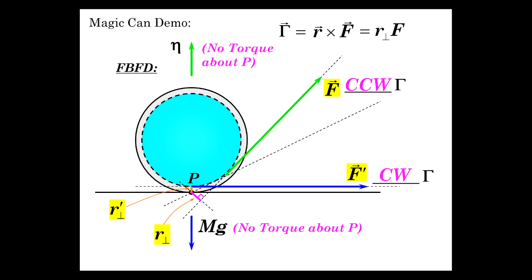And that's how that can be made sense of. And one more. Let's put the line of action right through the point so F double prime produces no torque because there is no moment arm between the line of action and the point of contact. So hopefully that was an enriching little description of the magic can.